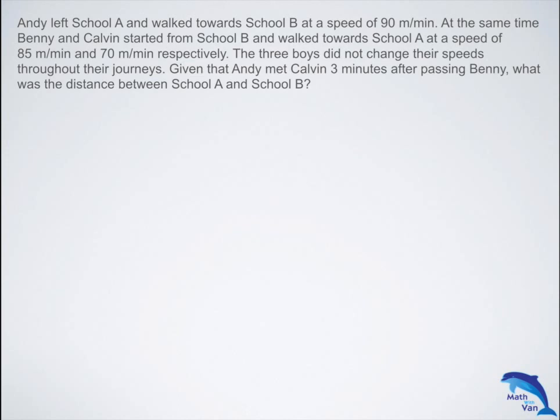Andy left school A and walked towards school B at a speed of 90 meters per minute. At the same time, Benny and Calvin started from school B and walked towards school A at a speed of 85 meters per minute and 70 meters per minute respectively. The three boys did not change their speed throughout their journeys. Given that Andy met Calvin three minutes after passing Benny, what was the distance between school A and school B?